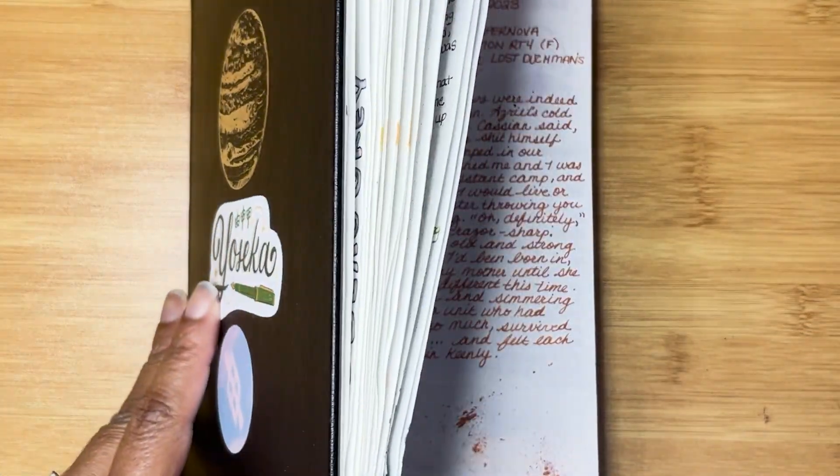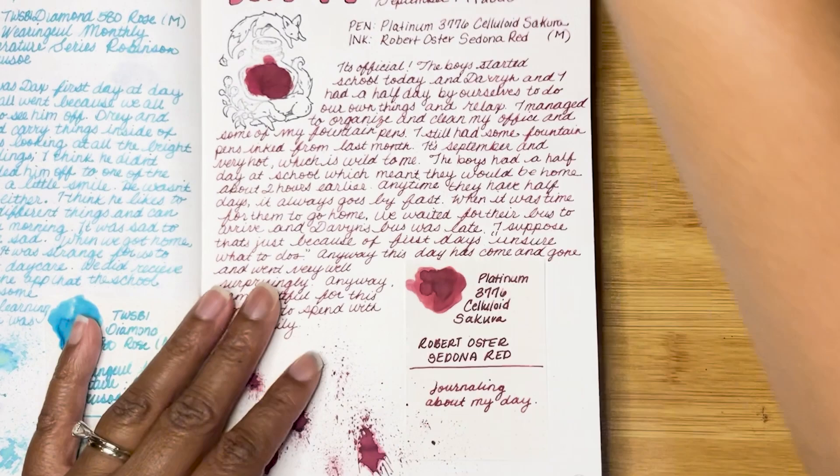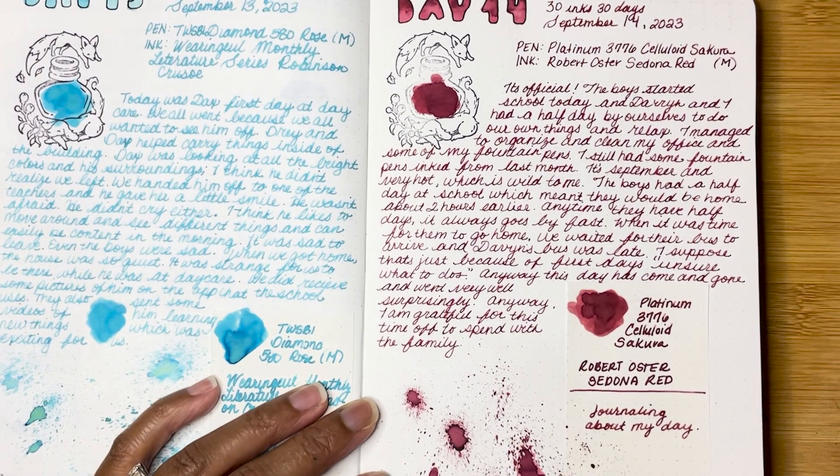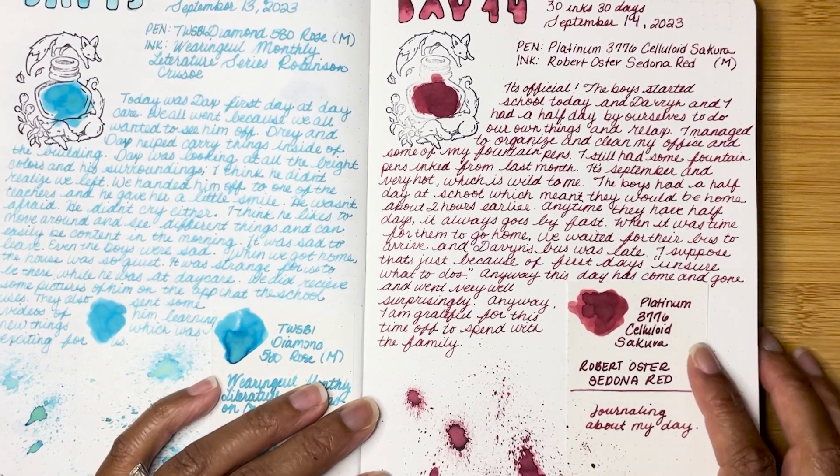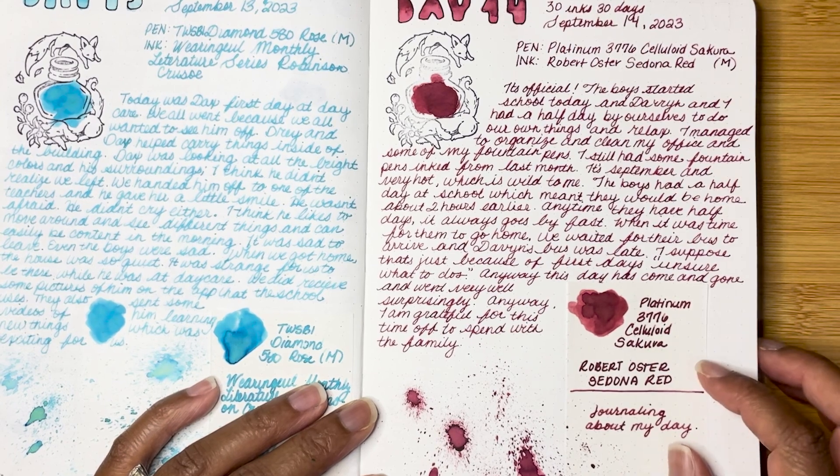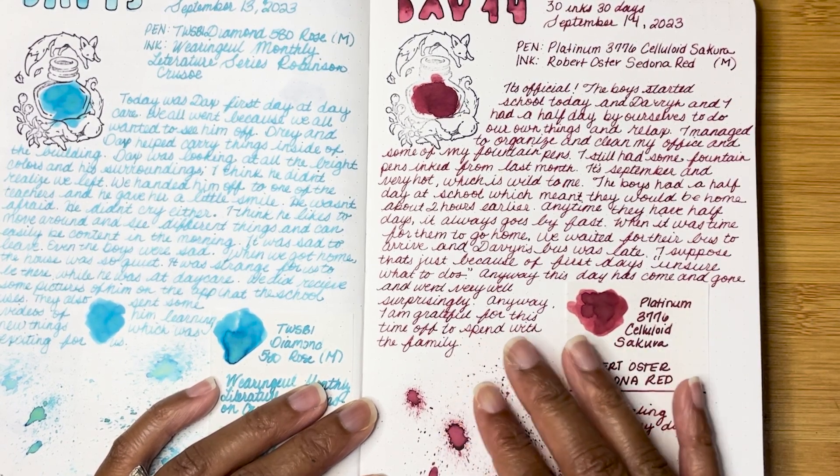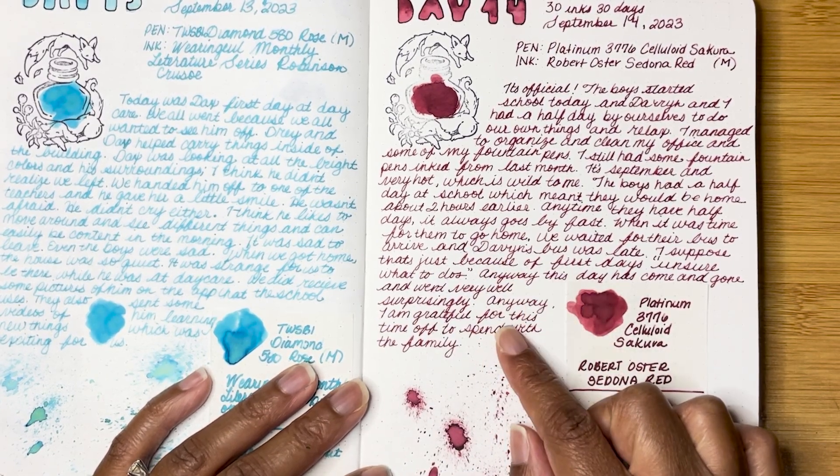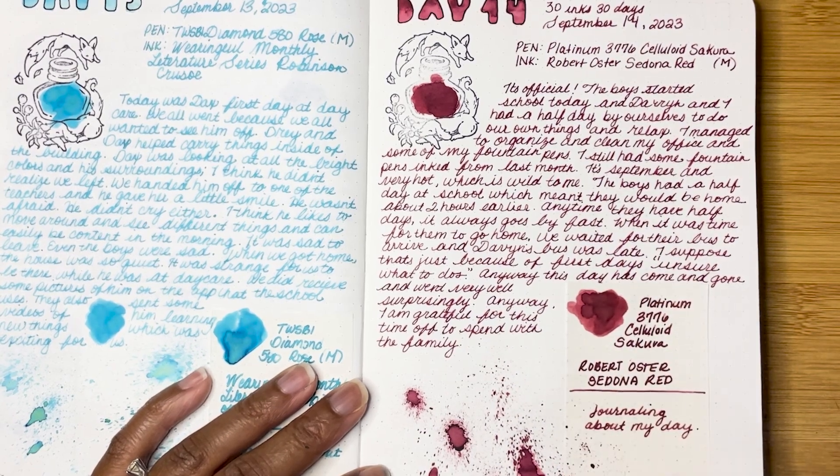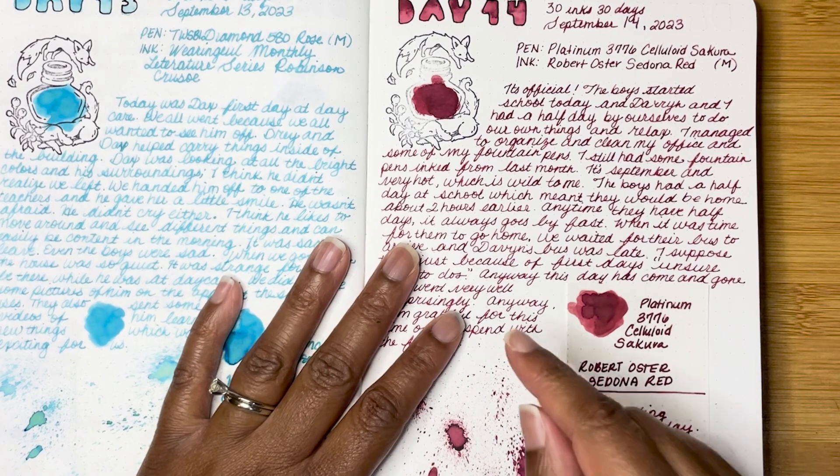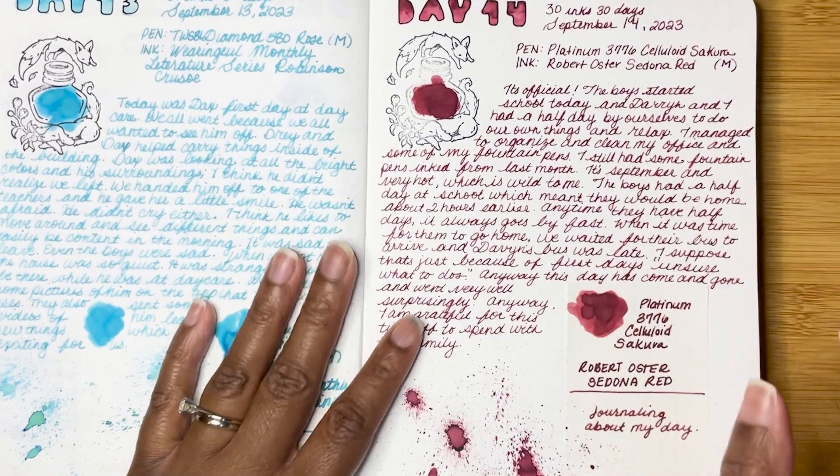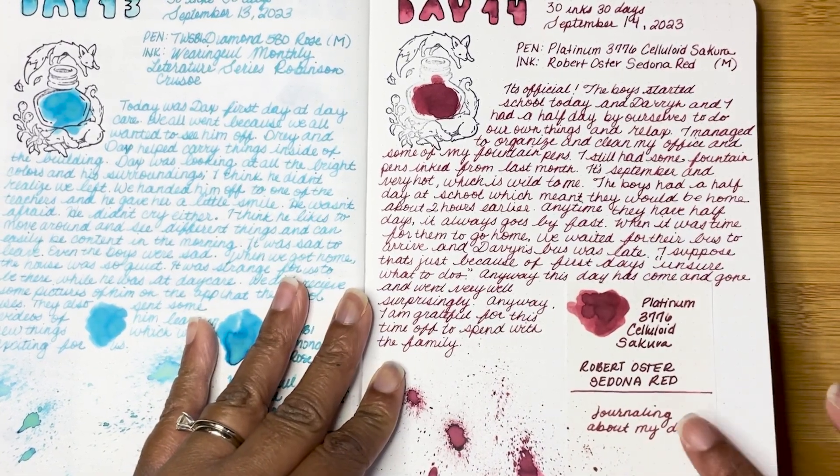Now on to this current week, let's take a quick look at day 14. This was with the Robert Oster Sedona Red and it's actually a really pretty, a little bit muted red. It's not very bright and that's more part of my comfort zone. I actually really enjoyed using this color. It was in my Platinum 3776 celluloid in Sakura, which is not next to me at the moment. But if you wanted to see what that looked like, please check out the video for day 14.